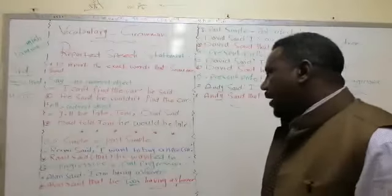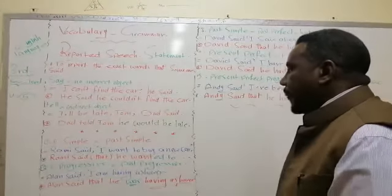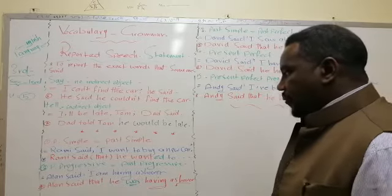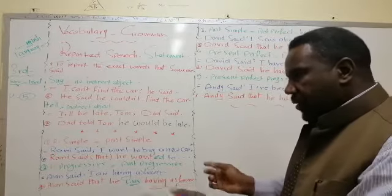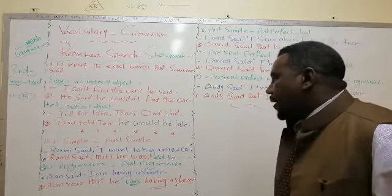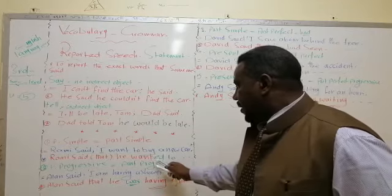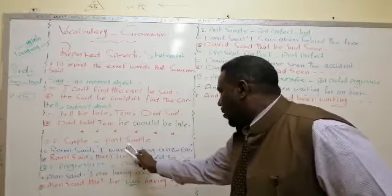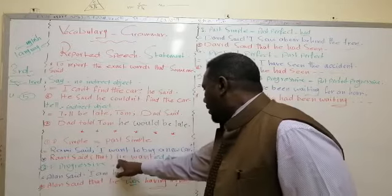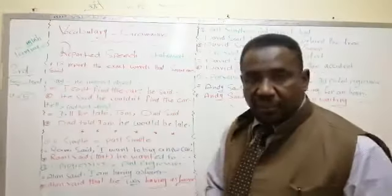For example, Rami said: 'I want to buy a new car.' When we report this sentence — we want to report Rami's speech — we say: 'Rami said that he wanted to buy a new car.' Automatically, the sentence changes from present simple to past simple. We also change the pronoun from 'I' to 'he'. This is the first case: the change from present simple to past simple.